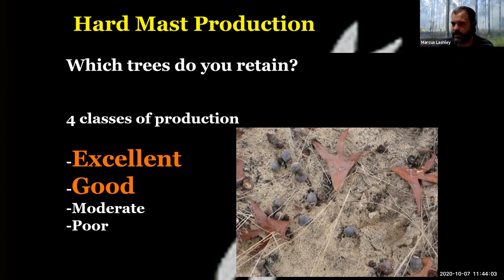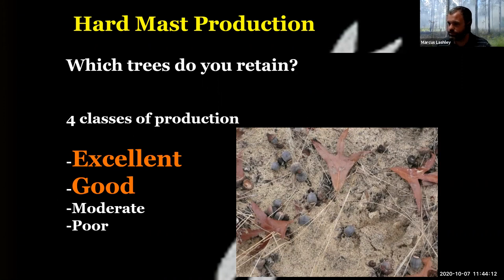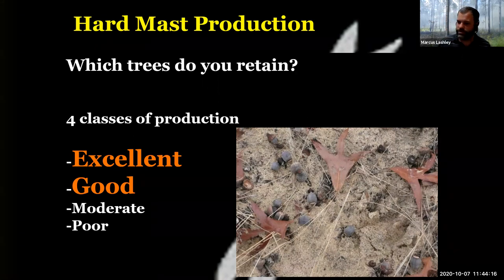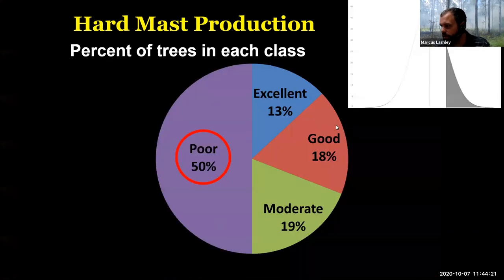We should expect this distribution of that gene on average — many of the producers are average producers, but there are individual trees in that population that are going to be excellent or good producers, and there are others that might be moderate or poor. Here's that bell-shaped curve I'm talking about right here.